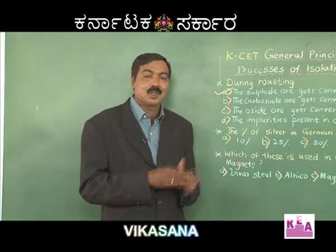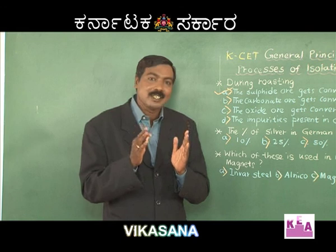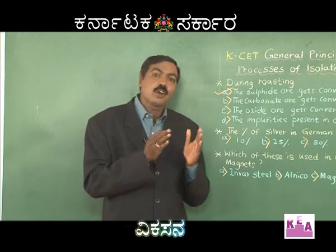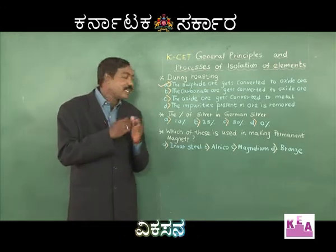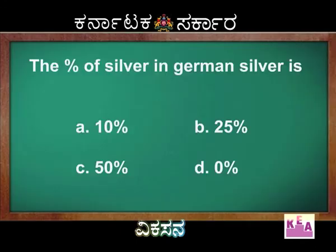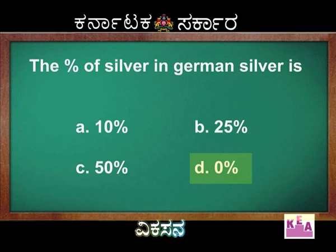I would like you all to prepare a chart of all the alloys of iron, copper, and aluminium — it will help you in your preparation. Therefore, the correct answer: the percentage of silver in German silver is 0%. It doesn't contain any silver at all.